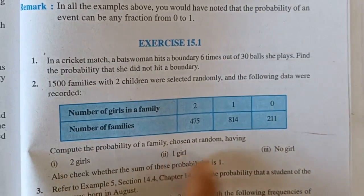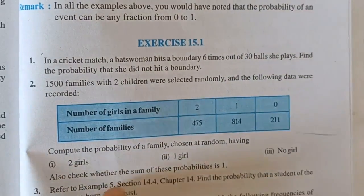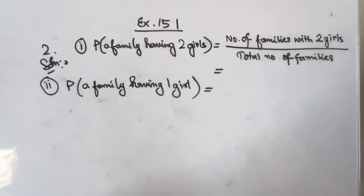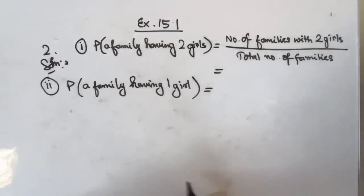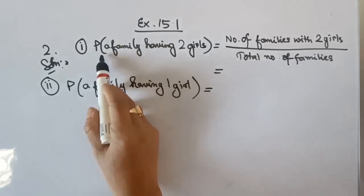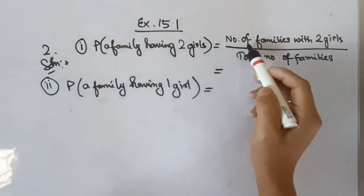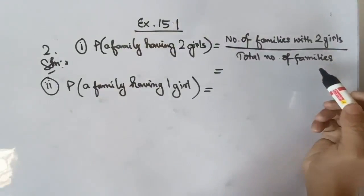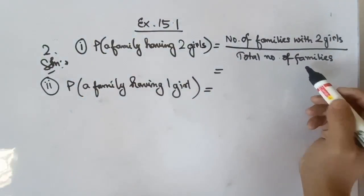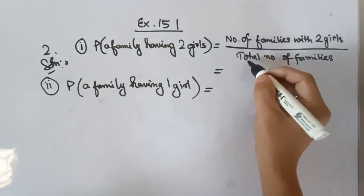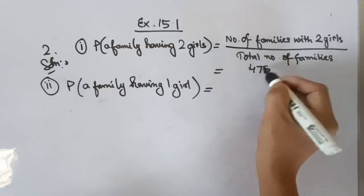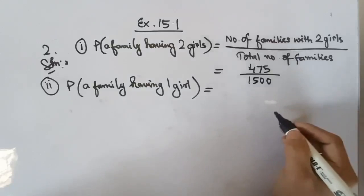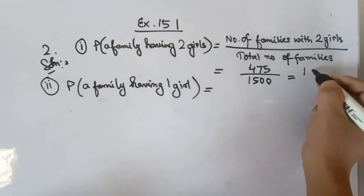Exercise 15.1, Question 2 solution. Part 1: The probability of a family having two girls is given by the number of families with two girls divided by the total number of families. The number of families having two girls is 475 and the total number of families is 1500. So 475 divided by 1500 equals 19 by 60. This is the required probability of a family having two girls.